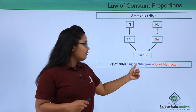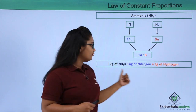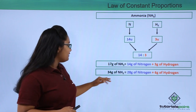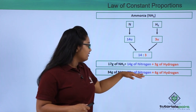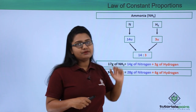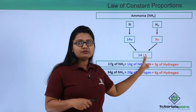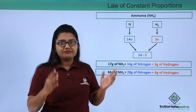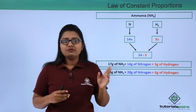If we have 17 grams of ammonia, it contains 14 grams of nitrogen and 3 grams of hydrogen. Similarly, 34 grams of ammonia contains 28 grams of nitrogen and 6 grams of hydrogen, maintaining the ratio 14:3 as required by the Law of Definite Proportions.